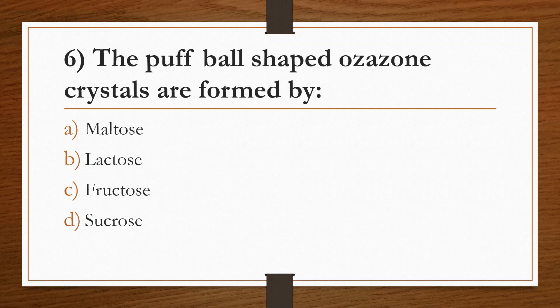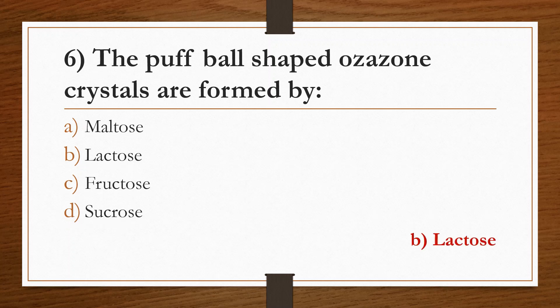Sixth question: the puff-ball shaped osazon crystals are formed by Option A: maltose. Option B: lactose. Option C: fructose. Option D: sucrose. Answer is Option B, lactose. Maltose is seen as sunflower-shaped crystals. Glucose, fructose, and mannose are seen as needle-shaped crystals. Sucrose does not form an osazone because it is a non-reducing sugar.